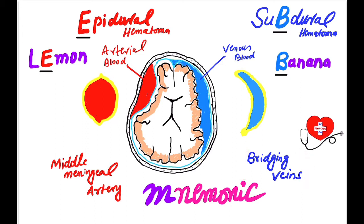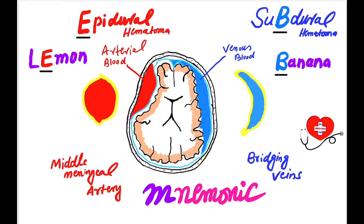Here is the mnemonic: have you ever seen a red lemon and a blue banana? No, really not — neither have I. These are only to help you remember. This is a lemon full of red arterial blood, like that of epidural hematoma, and it is biconvex like epidural hematoma. The word 'epidural' has the alphabet E, and the word 'lemon' also has an E, so you can easily remember: epidural = lemon.